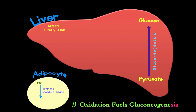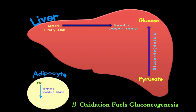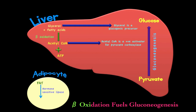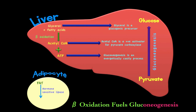Both glycerol and fatty acids play a role in gluconeogenesis. Glycerol is a glucogenic precursor — we looked at that in part 1. There are two reactions that bring glycerol into gluconeogenesis. As for the fatty acids, there's a process called beta oxidation that breaks them down, producing two products: acetyl-CoA and ATP. Wonderfully, acetyl-CoA is a positive activator for pyruvate carboxylase, which is one of the enzymes in the first bypass reaction of gluconeogenesis. And obviously, the ATP is needed because gluconeogenesis is energetically costly.